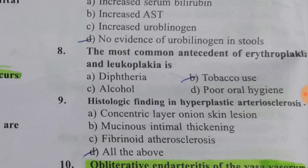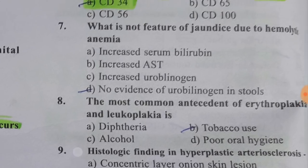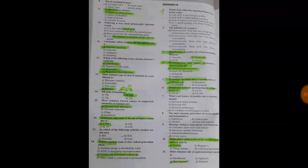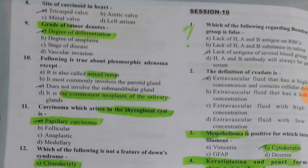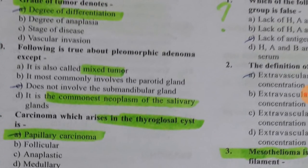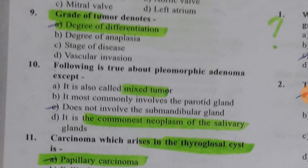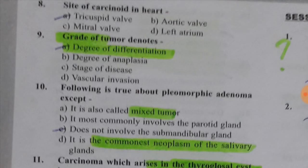The most common antecedent of erythroplakia and leukoplakia is tobacco use. This completes this part of the video. I wish you all the very best and good luck for your exam. The hard times will go and good times will come — all the very best. This is Dr. Shivam signing off, thank you.